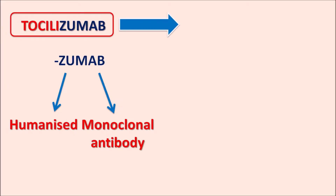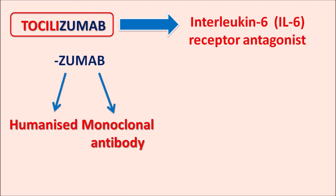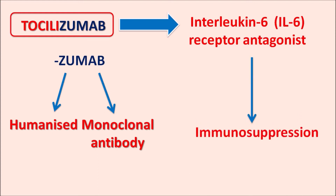This drug acts as an interleukin-6 receptor antagonist. IL-6 is one of the inflammatory mediators released by stimulation of the immune response. When T cells are activated, IL-6 is released along with other inflammatory mediators, and this cytokine can produce an inflammatory response. Tocilizumab acts as an antagonist at IL-6 receptors, thereby reducing immunity and resulting in immunosuppression, which also reduces the inflammation.